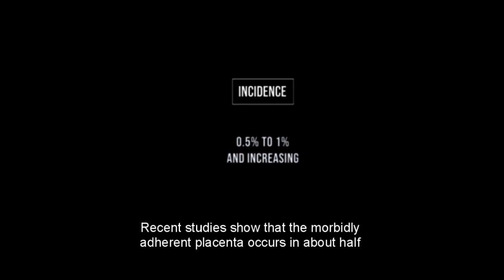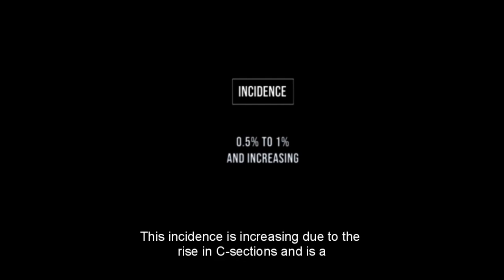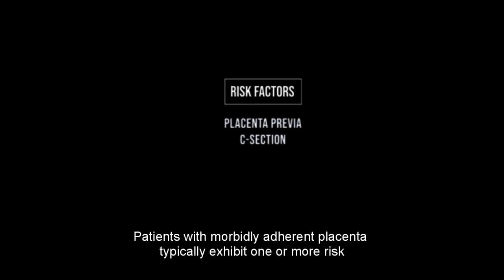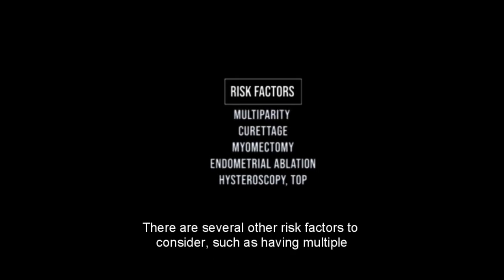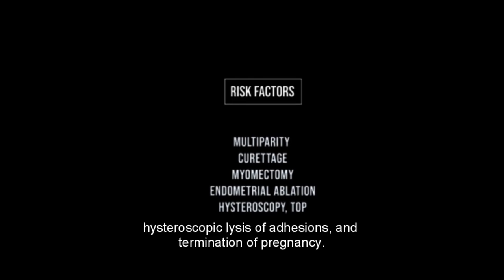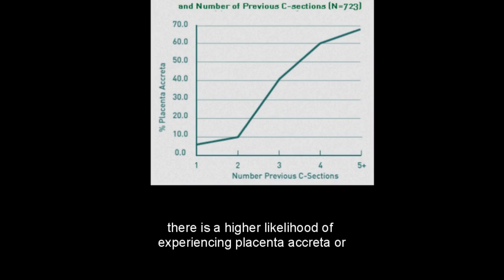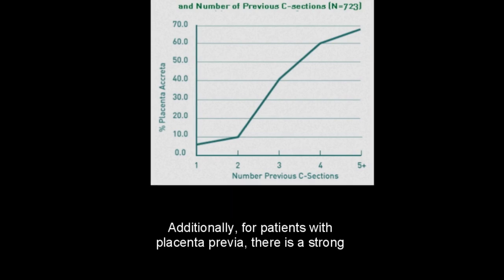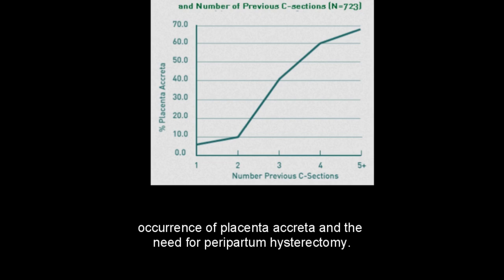Recent studies show that the morbidly adherent placenta occurs in about 0.5% to almost 1% of pregnancies. This incidence is increasing due to the rise in C-sections and is a significant issue in modern obstetrics. Patients with morbidly adherent placenta typically exhibit one or more risk factors, the most significant being placenta previa and C-sections. Other risk factors include multiple previous pregnancies, previous curettage procedures, a history of myomectomy or endometrial ablation, hysteroscopy lysis of adhesions, and termination of pregnancy. When a woman has had previous cesarean sections and anterior placenta previa, there is a higher likelihood of placenta accreta. For patients with placenta previa, there is a strong connection between the number of previous cesarean deliveries, the occurrence of placenta accreta, and the need for peripartum hysterectomy.